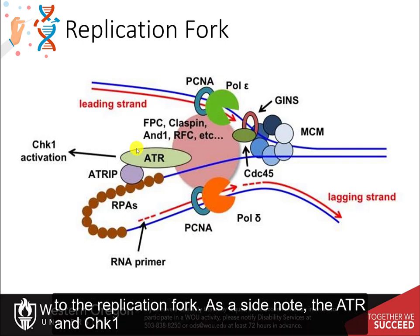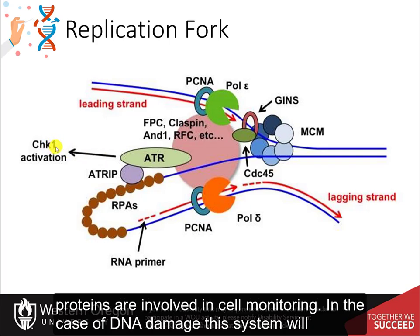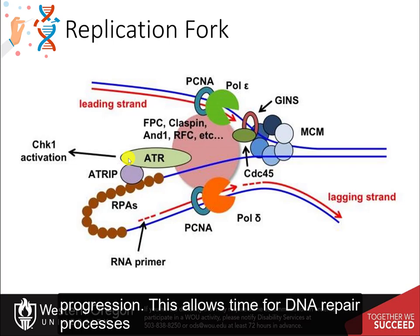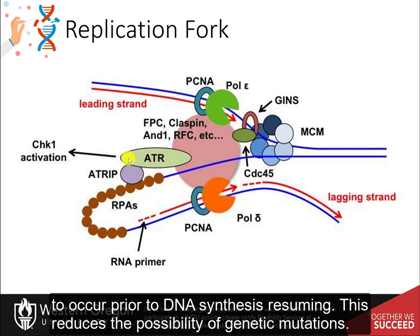As a side note, the ATR and CHK1 proteins are involved in cell monitoring. In the case of DNA damage, this system will become active, inhibit origin firing, and stall active replication fork progression. This allows time for DNA repair processes to occur prior to DNA synthesis resuming, which reduces the possibility of genetic mutations.